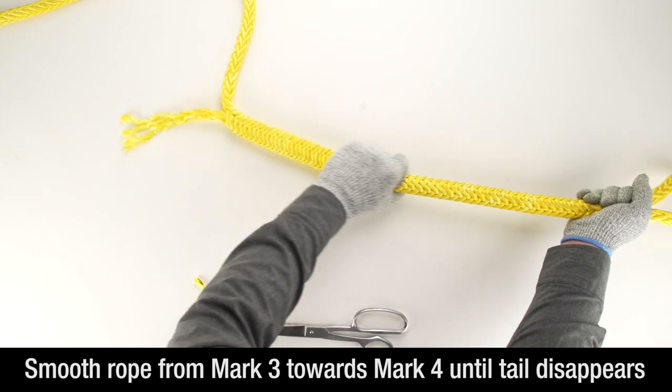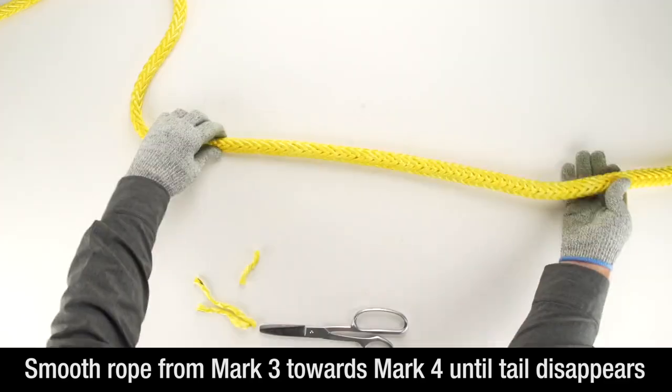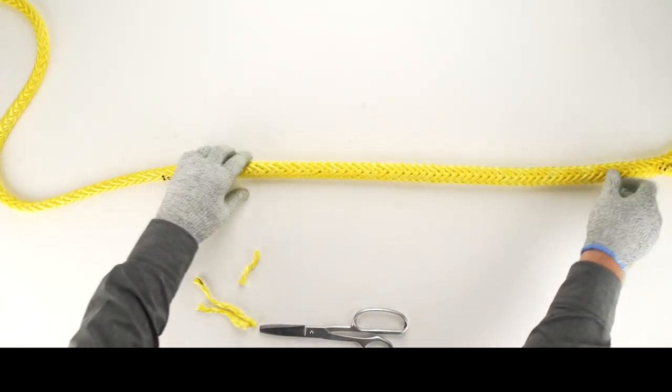Now, smooth the rope from mark 3 towards mark 4 until the tail disappears into the body of the rope. To make completion of the bury easier, it can help to attach the eye to a fixed point.